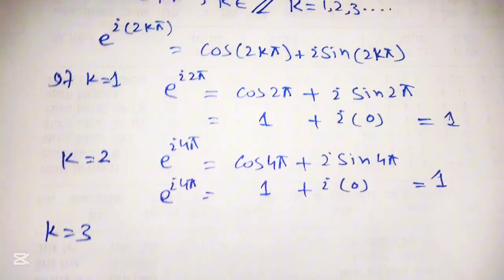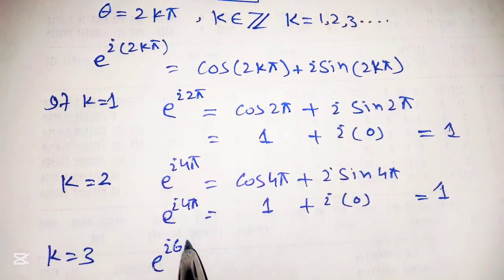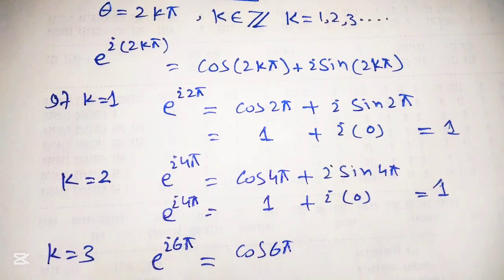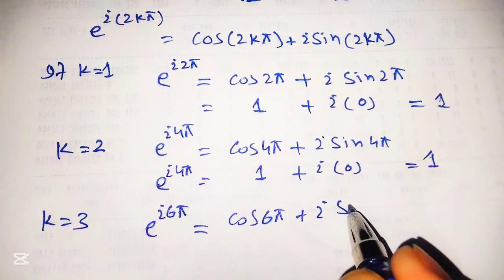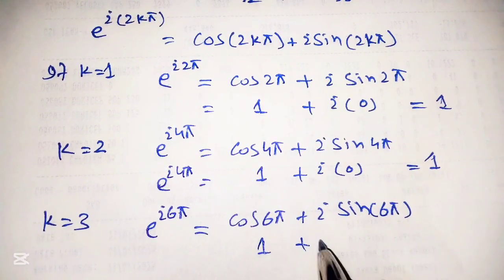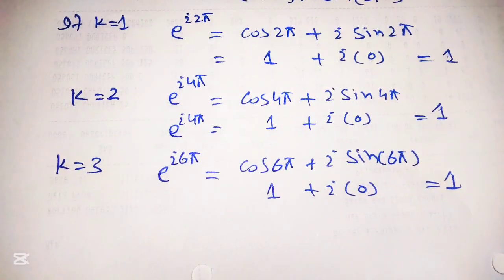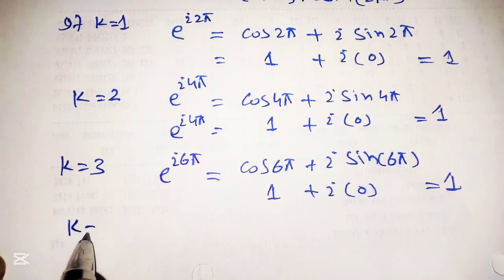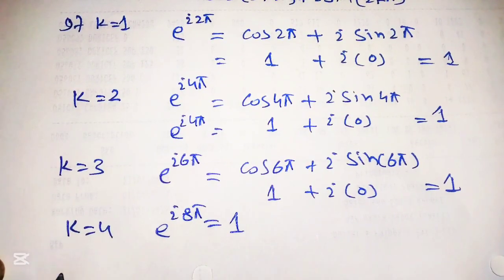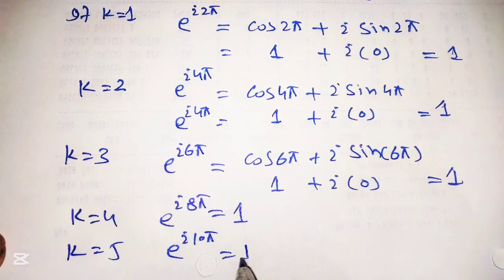If k is equal to 3, then e raised to power iota 6pi equals cos of 6pi plus iota sin of 6pi, which again equals 1. Similarly, if k is equal to 4, then e raised to power iota 8pi equals 1, and if k is equal to 5, then e raised to power iota 10pi equals 1.